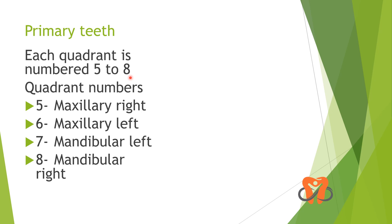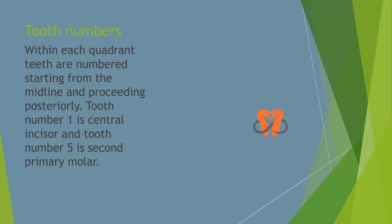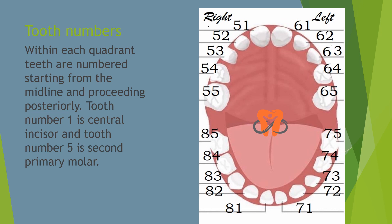For the primary teeth, each quadrant is numbered 5 to 8: quadrant 5 is maxillary right, 6 is maxillary left, 7 is mandibular left, and 8 is mandibular right. Within each quadrant, teeth are numbered starting from the midline, with 1 representing the central incisor and 5 representing the primary second molar. The designations work the same way — '5, 1' is the right maxillary primary central incisor, '6, 3' is the left maxillary primary canine, '7, 5' is the left mandibular second molar, and '8, 4' is the right mandibular primary first molar.